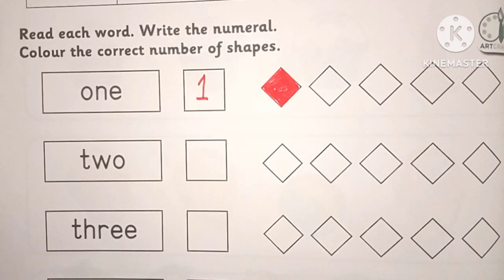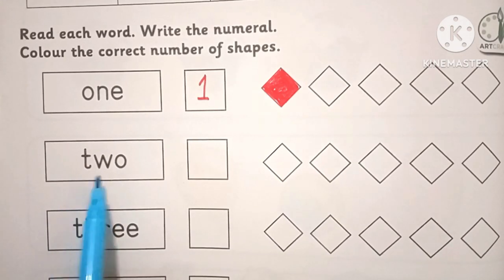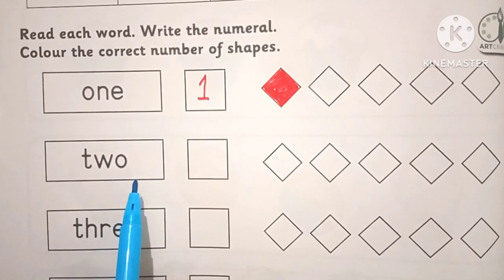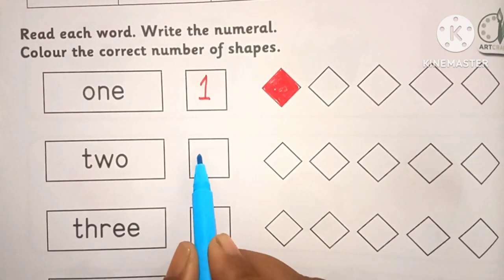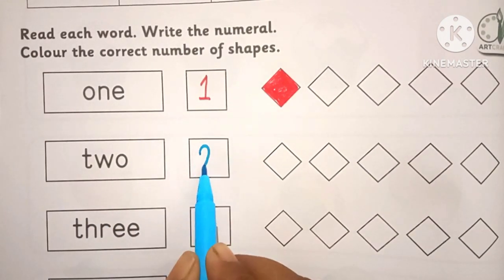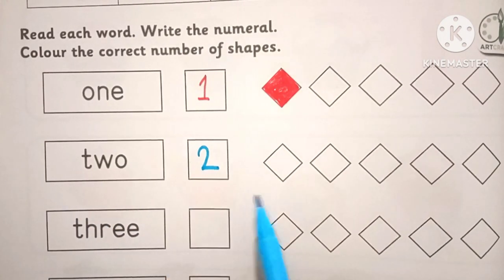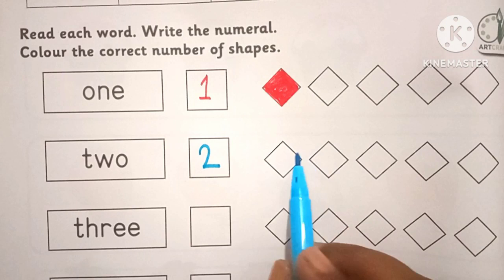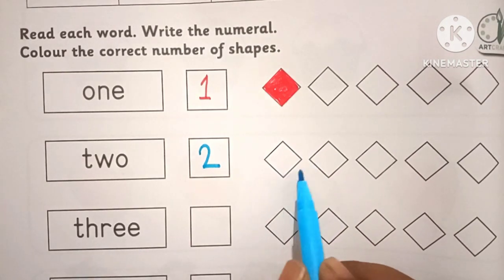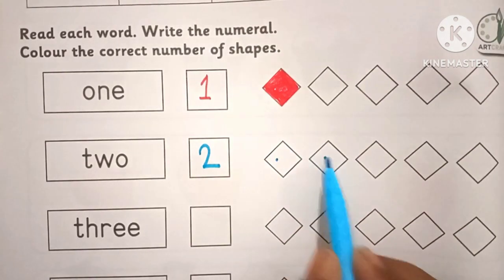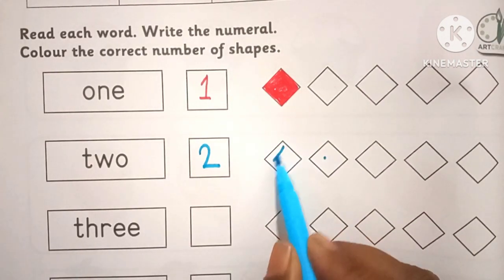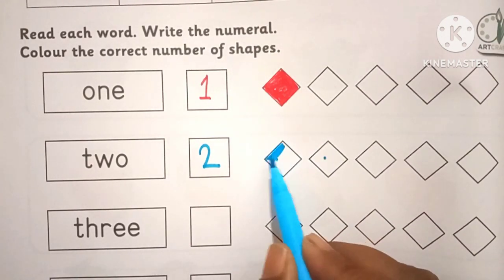Next, T-W-O, 2. Then color 2 shapes: 1, 2.